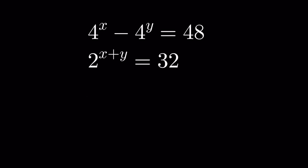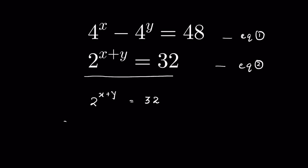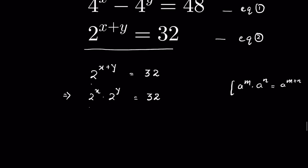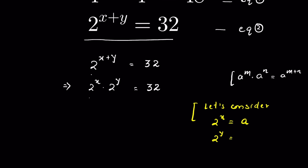Let 4^x - 4^y = 48 be equation 1, and 2^(x+y) = 32 be equation 2. From equation 2, we can write 2^(x+y) as 2^x times 2^y, using the rule a^m times a^n equals a^(m+n). So 2^x times 2^y equals 32. Let us consider 2^x equal to a and 2^y equal to b.